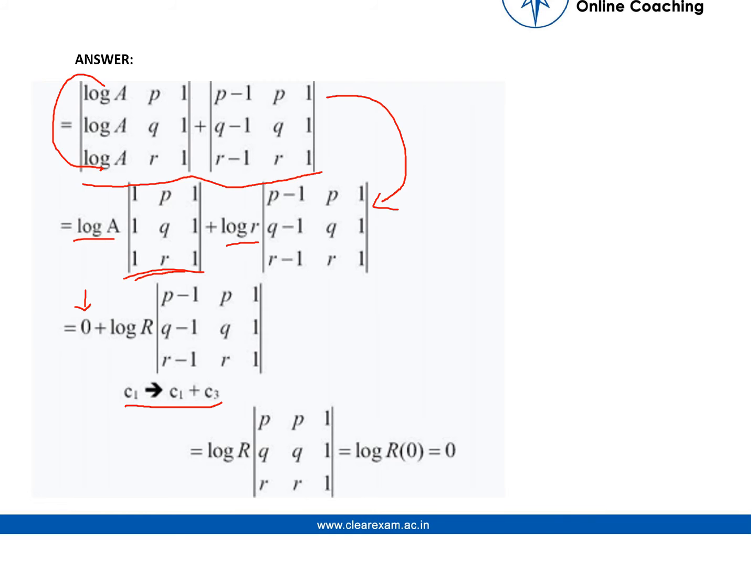Now if we do a column transformation where column 1 changes to column 1 plus column 3, then we get this matrix. In this matrix, two columns are equal, and hence this will also be a null matrix. So we have proved that the determinant equals zero.